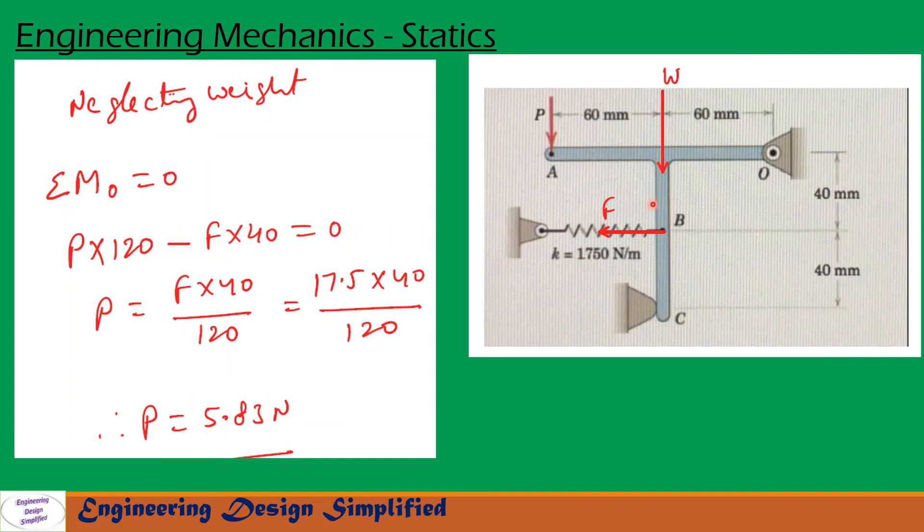Now in case B we neglect weight. So the previous equation will become P into 120 minus F into 40 equal to zero. So moment due to W is removed here.